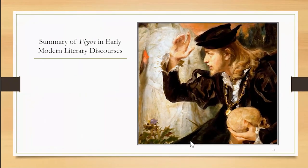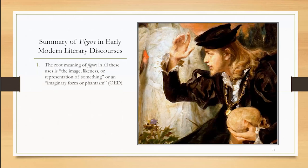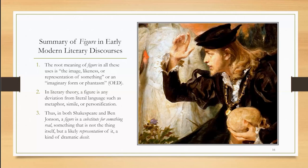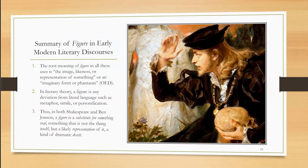Let's summarize the word figure in early modern literary discourses. The root meaning of figure in all these uses is the image, the likeness, or representation of something — or an imaginary form or phantasm. In literary theory, a figure is a deviation from literal language, such as metaphor, simile, or personification. Thus, in both Shakespeare and Ben Johnson, a figure is a substitute for something real — something that is not the thing itself, but a likely representation of it. A kind of dramatic deceit.